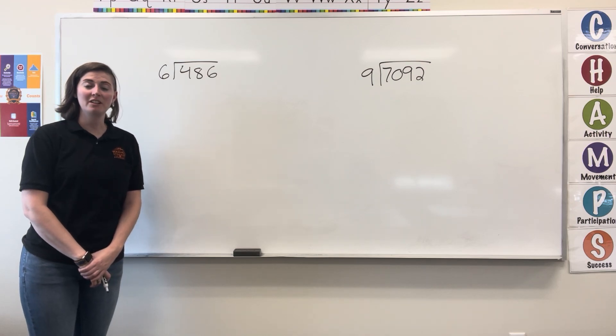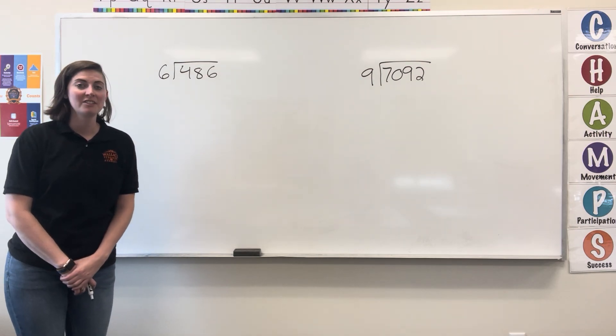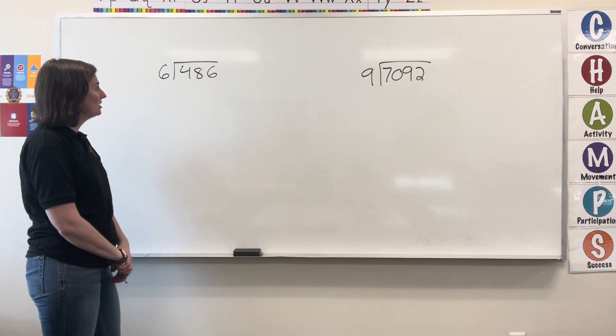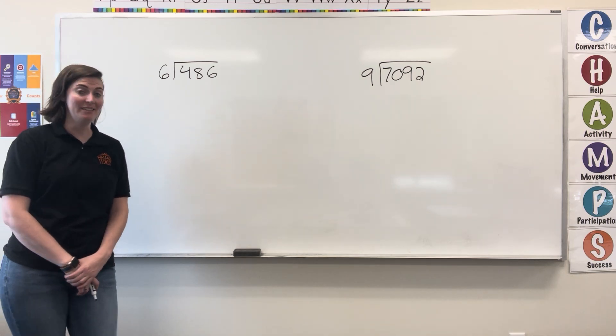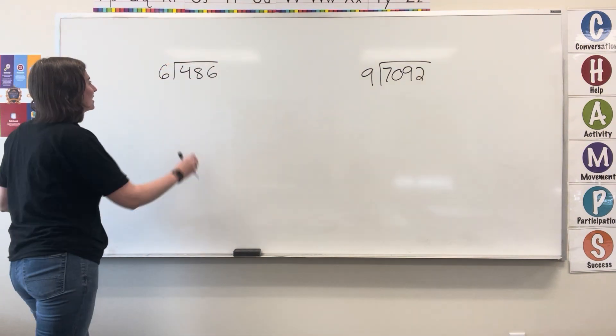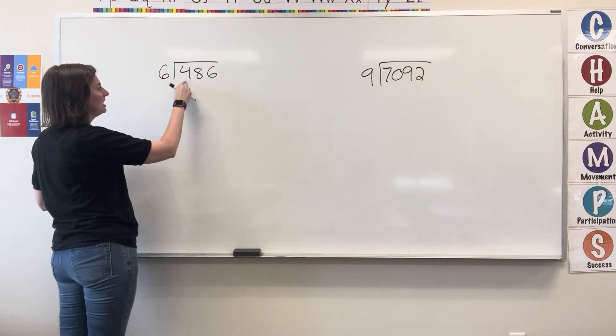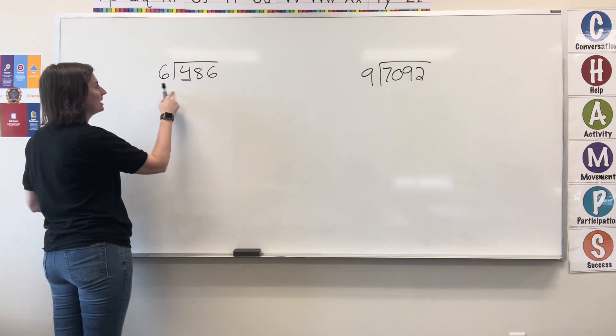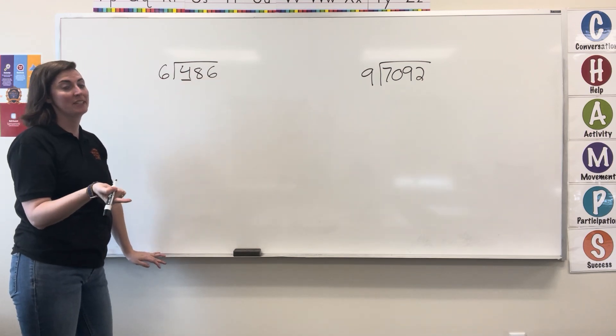In this video, I'm going to be solving long division equations. So in my first example, I have 486 being divided by 6. I have my divisor and my dividend. I'm looking for the quotient. I'm going to check to see if 6 fits into the first digit. Does 6 fit into 4? No. 6 is too big.